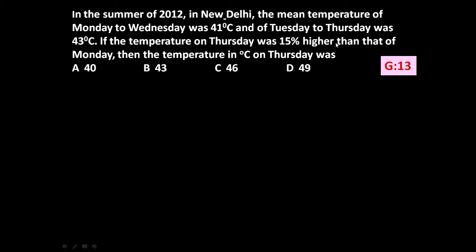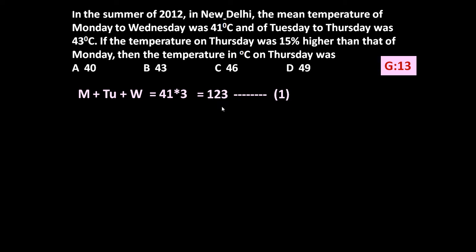Let us go statement-wise. The mean temperature from Monday to Wednesday was 41 degree Celsius. This means the temperature of Monday plus Tuesday plus Wednesday equals 41 into 3, which is 123 degree Celsius. This is equation number one.